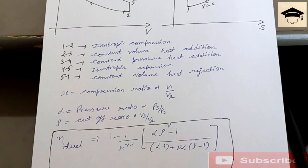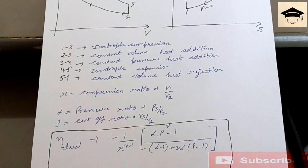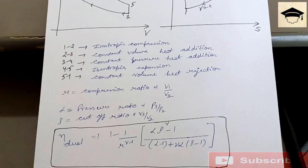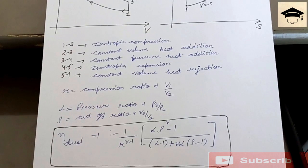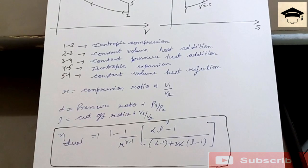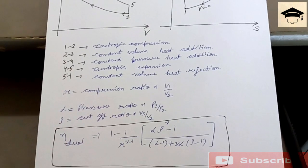Here you can substitute the value of compression ratio that is r, pressure ratio that is alpha, and the cutoff ratio that is rho. You can substitute in this formula and you can find the efficiency of the dual cycle.